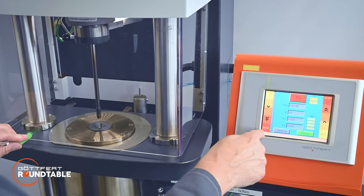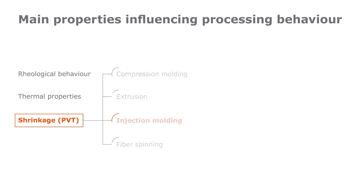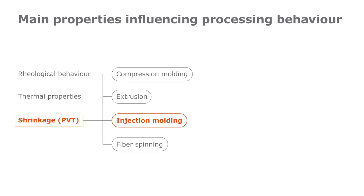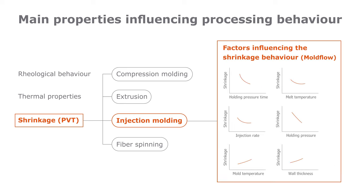Shrinkage is important for compression molding, extrusion, fiber spinning, and especially injection molding. Here we have parameters like holding pressure, injection pressure, melt temperature, and mold temperature influencing the shrinkage.